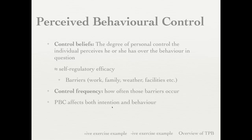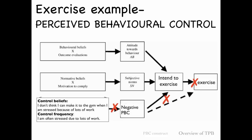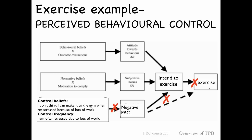Perceived behavioral control affects both intention and behavior. For a negative example: a control belief might be 'I don't think I can make it to the gym when I'm stressed due to lots of work,' and the control frequency is that this stress occurs very often. So they'll have very negative perceived behavioral control and won't make the intention nor follow through. For a positive example: someone might think they can get to the gym even during a busy exam period, and even though that occurs often, because they believe they can make it, they will — leading to positive perceived behavioral control, positive intention, and positive behavior.